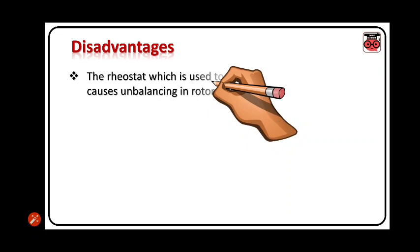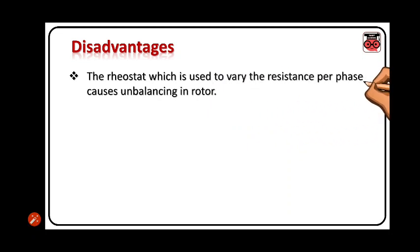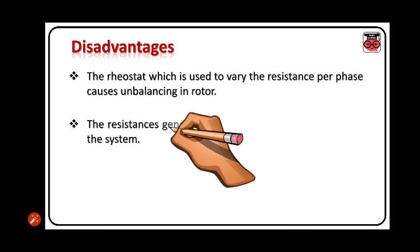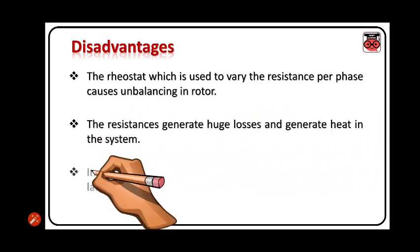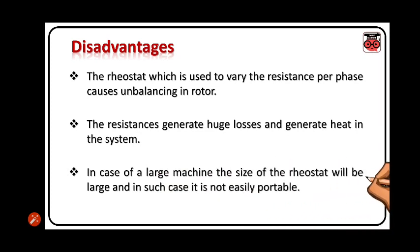Disadvantages: The rheostat which is used to vary the resistance per phase causes unbalancing in rotor. The resistance generates huge loss and generates heat in the system. In case of large machines, the size of rheostat will be large and in such case it is not easily portable.